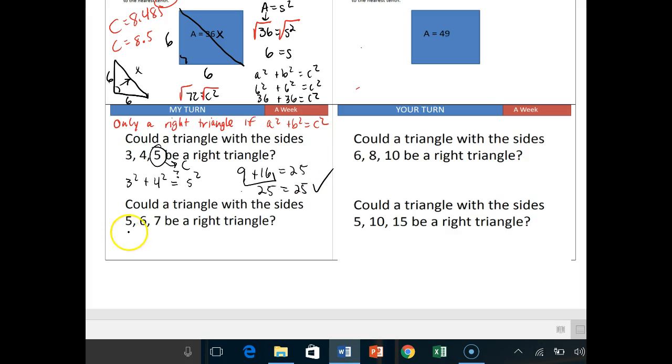Let's try it again with this one. Is 5 squared plus 6 squared equal to 7 squared? Again, the biggest number has to be the hypotenuse.